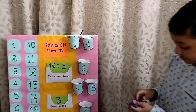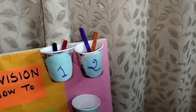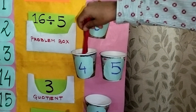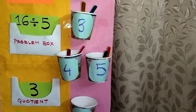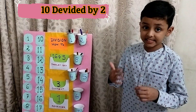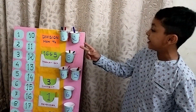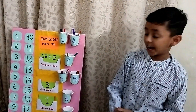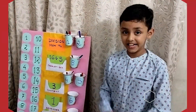Two sticks in the first box, two in the second box, two in the third box, two in the fourth box, and the last two in the fifth box. I filled all 10 sticks with 2 in each cup. That means the answer of 10 divided by 2 equals 5, because I filled five boxes with two sticks in each.